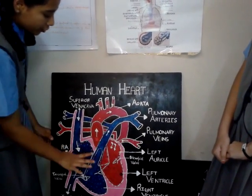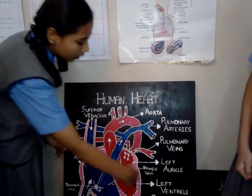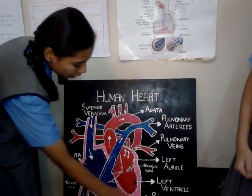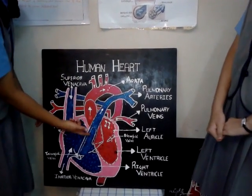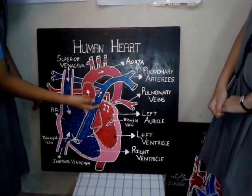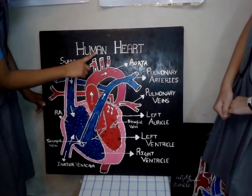The heart consists of four chambers. The upper two chambers are called auricles. The lower two chambers are called ventricles. The auricles and ventricles are connected by walls which allow blood to flow but not backward.